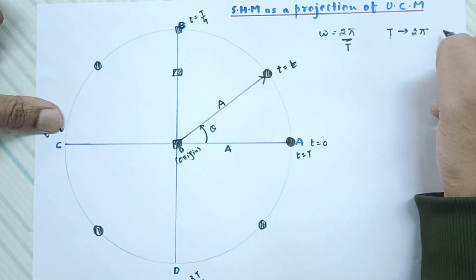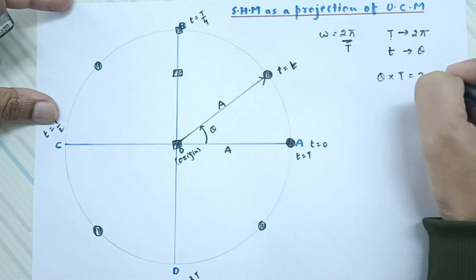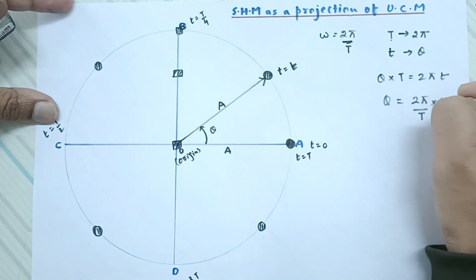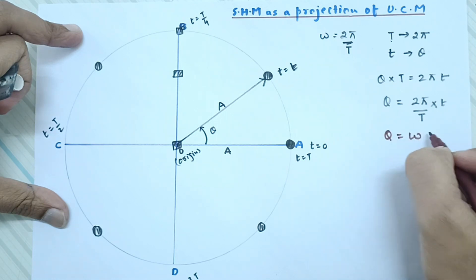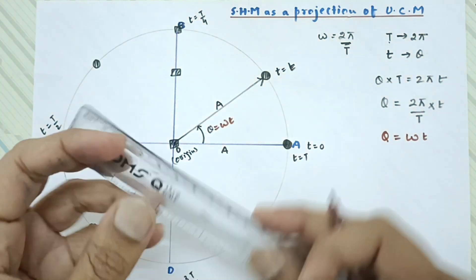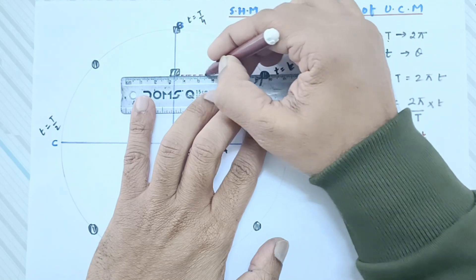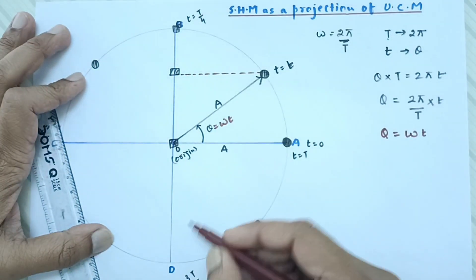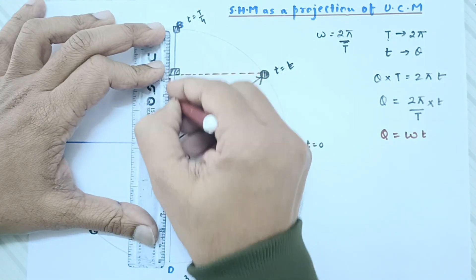In time capital T, the angle swept is 2π; in time small t, the angle is theta. Cross-multiplying: theta × T = 2π × t, so theta = (2π/T) × t. Since 2π/T equals omega, theta equals omega times t. We now use ωt in our derivation. When the tube light is positioned horizontally, the shadow along the Y-axis is what we focus on, calling its displacement y.